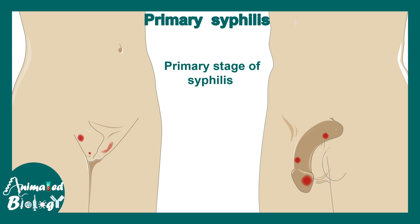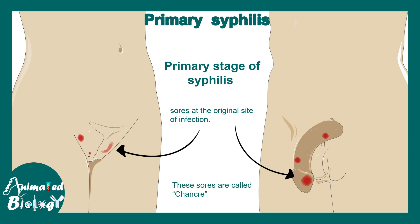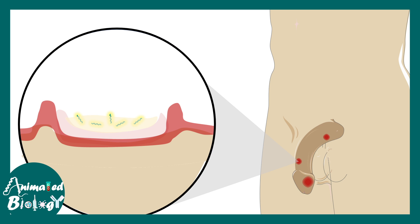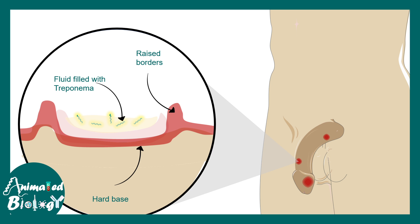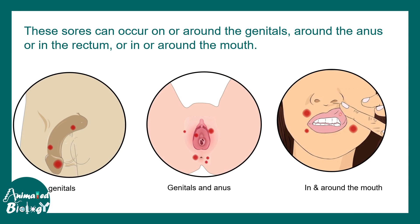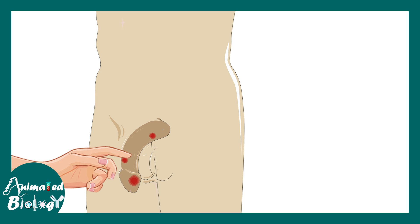In the primary phase of syphilis, there are rashes and sores present on the external genitalia and many other places. These sores are known as chancre. Zooming into one chancre, it has a raised border, hard base, and a fluid-filled region enriched with Treponema bacteria. These rashes can be present on the genitals, anus, or around the mouth. During sexual activity, contact with a chancre allows Treponema to invade through any skin breaches.